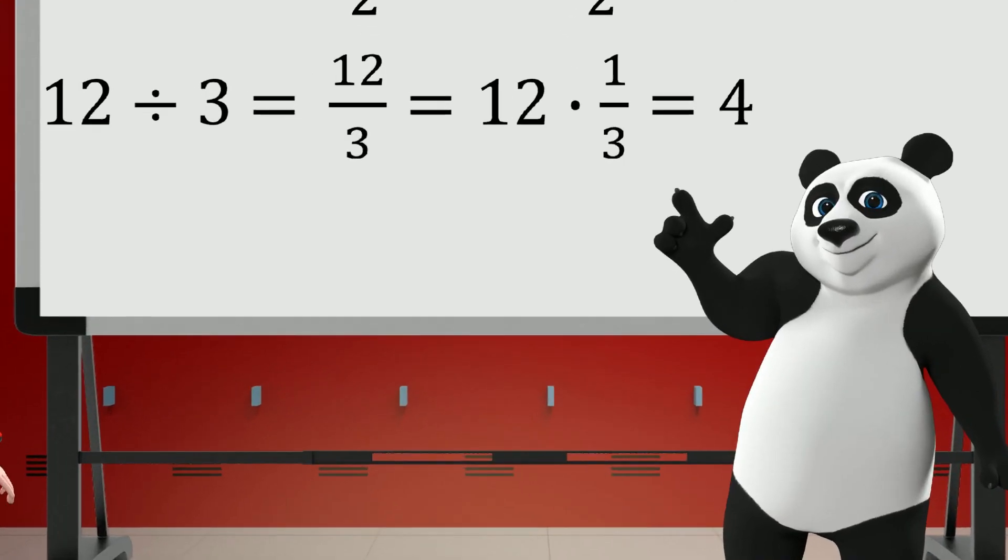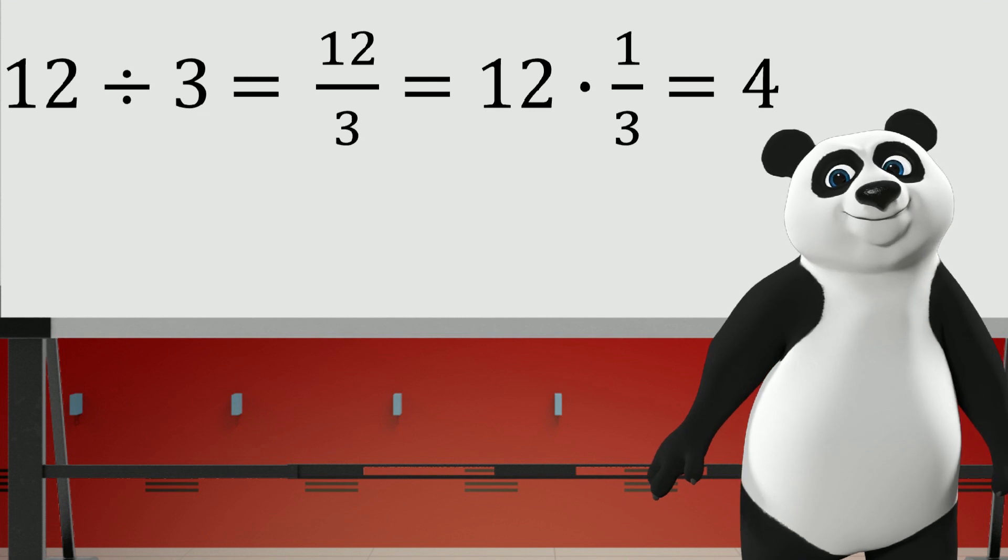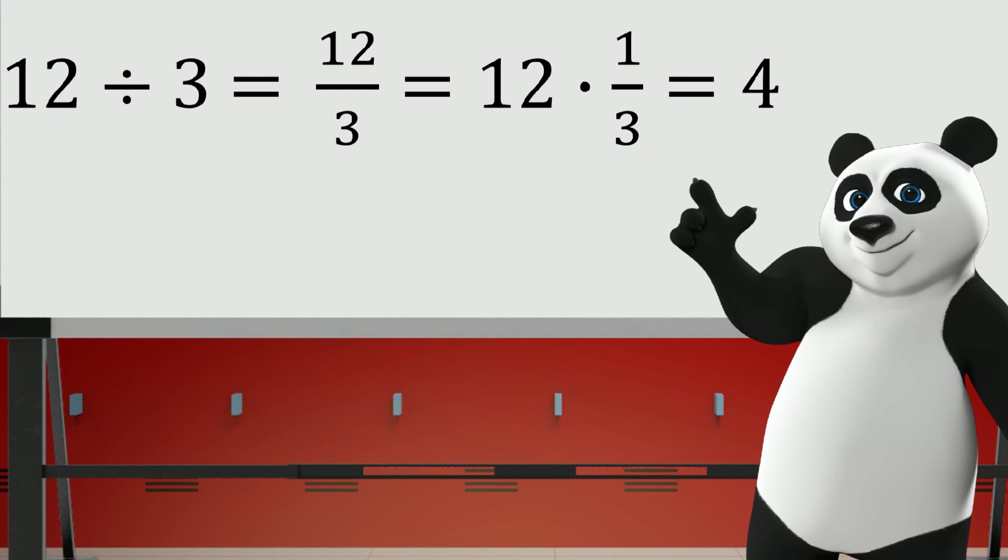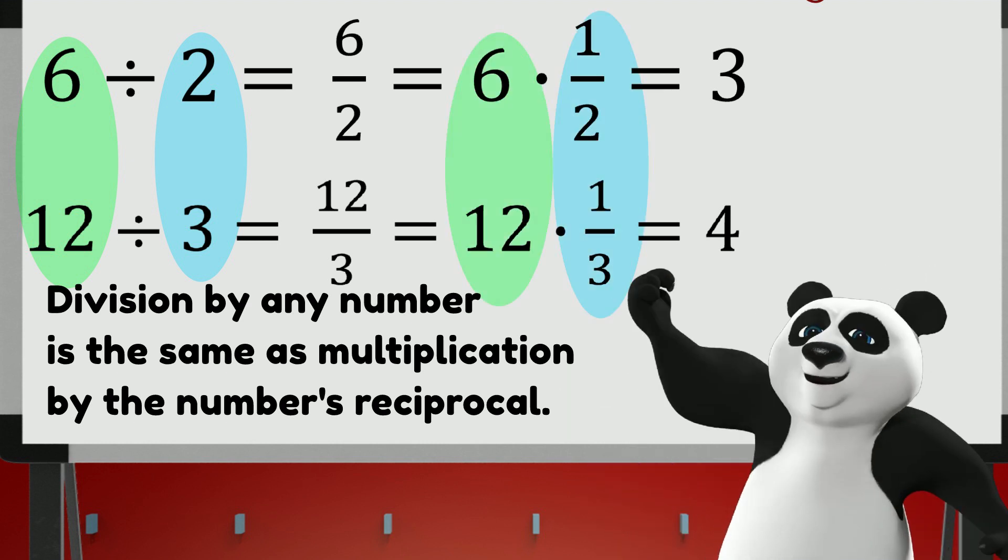Looking at another example, 12 divided by 3 equals 4. We see here that dividing 12 by 3 is the same as 12 multiplied by 1 third. From both examples, we see that dividing a number by a second number is the same as multiplying the first number by the reciprocal of the second number.